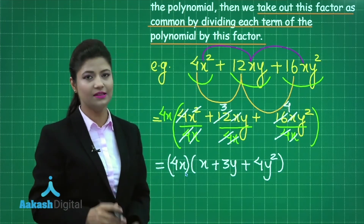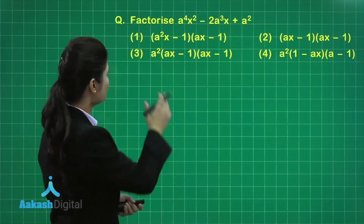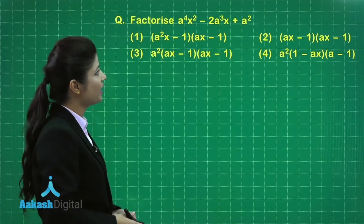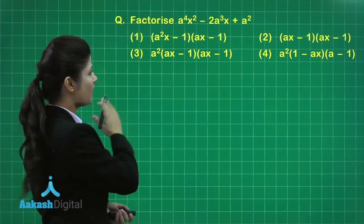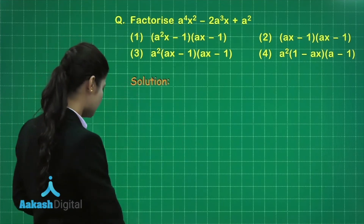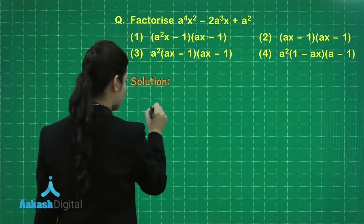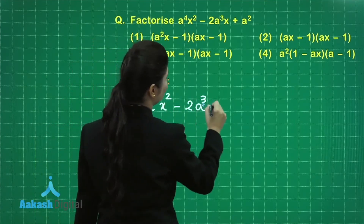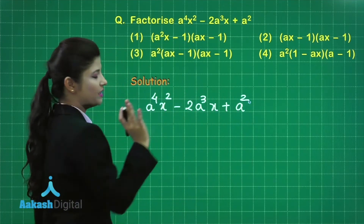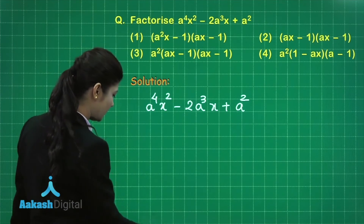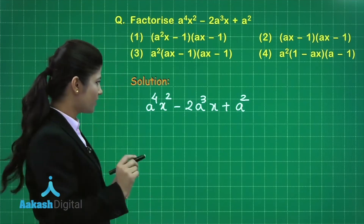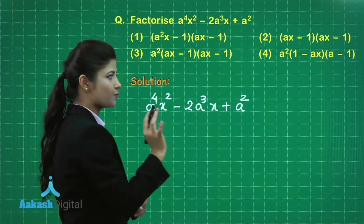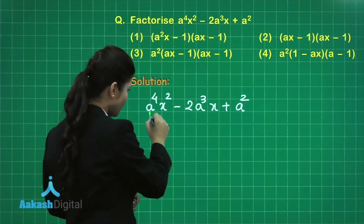Now let's discuss a practice question: Factorize a⁴x² - 2a³x + a². This is a multiple choice question. First we identify the common factor. Checking for x — it is present in only two terms, not the third, so x cannot be the common factor. When we check for a, it is present in all three terms.